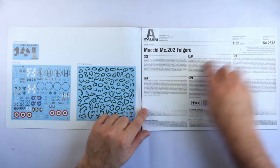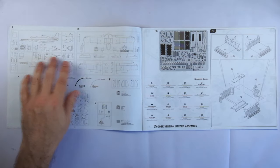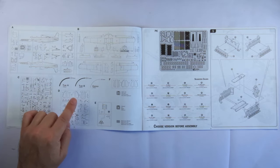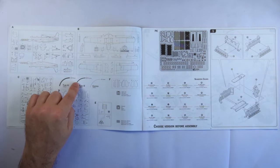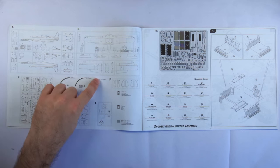Opposite that is a short piece of history on the aircraft in various languages. The next pages are much more useful, having full frame layouts for all the pieces, including all the extra bits like the photo-etch, tubing, etc.